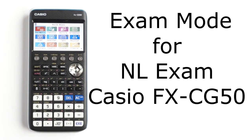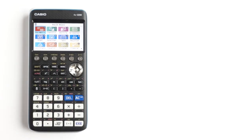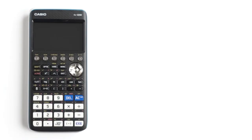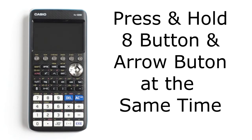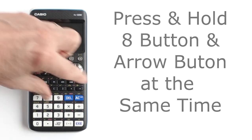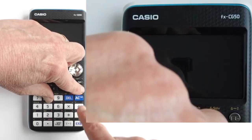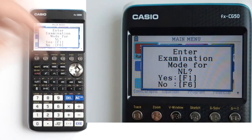How do I go into exam mode for the NL Netherlands exam on the Casio FX-CG50? First, you need to turn off the calculator by pressing the shift button, then the blue AC ON button. Then with your left hand, press and hold the 8 button and this arrow button at the same time. While holding those two buttons, long press the blue AC ON button. Then this screen will appear.